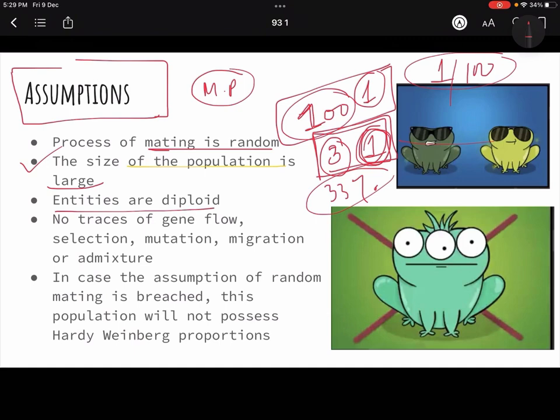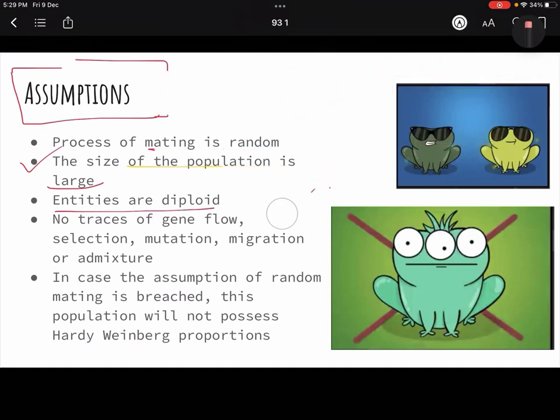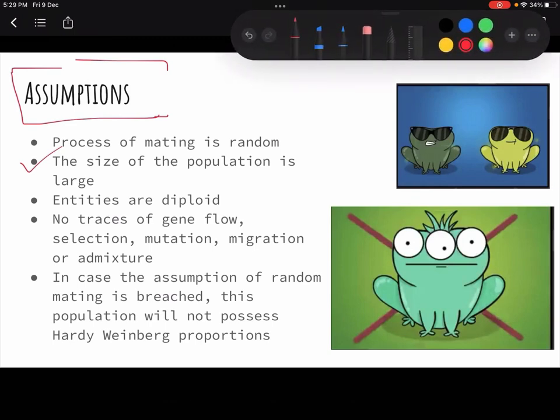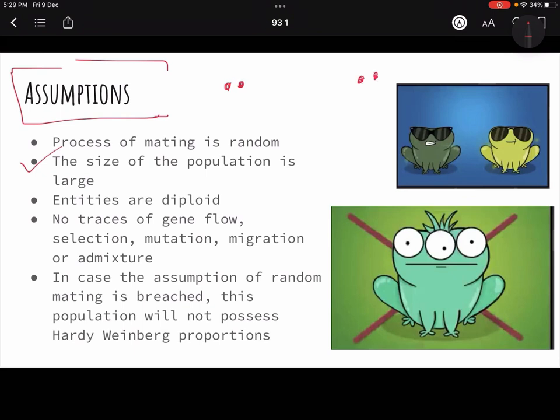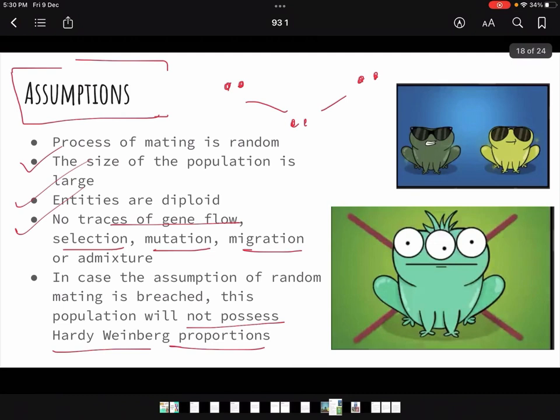Then entities have to be diploid. Whenever any traits pass on to the children, it is from the diploid, they become haploid and everybody has the equal chance of getting transmitted to the next generation. Then no traces of gene flow, selection, mutation, migration. In short, no evolutionary influence should take place. And if the assumption of random mating is breached, then population will not achieve the Hardy-Weinberg law.